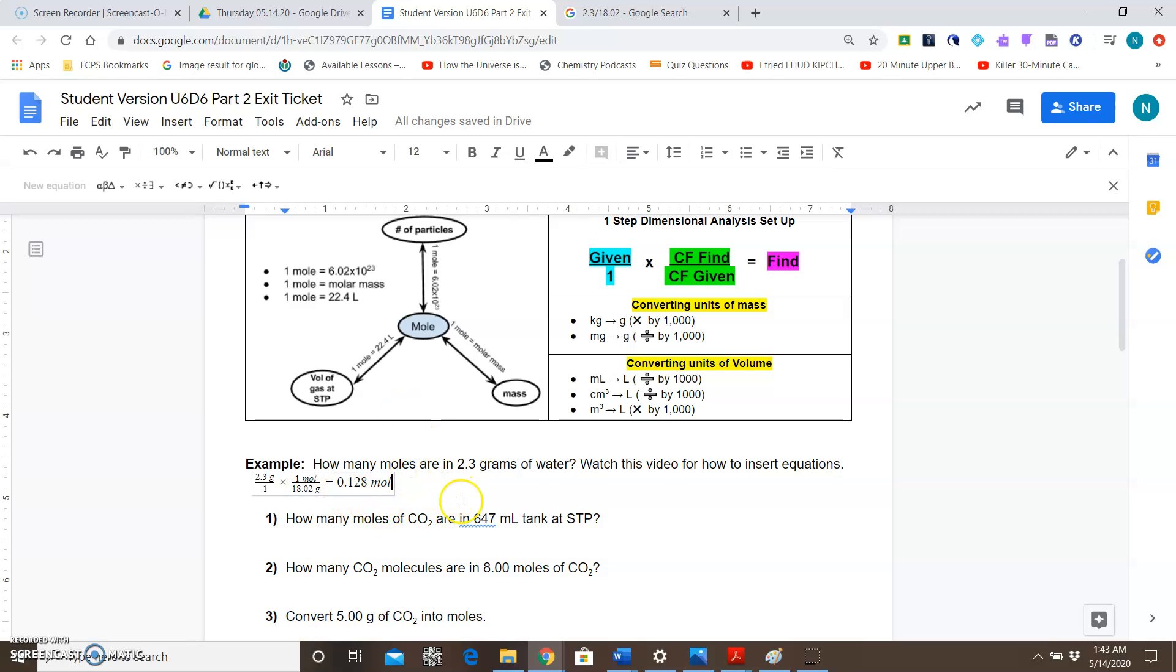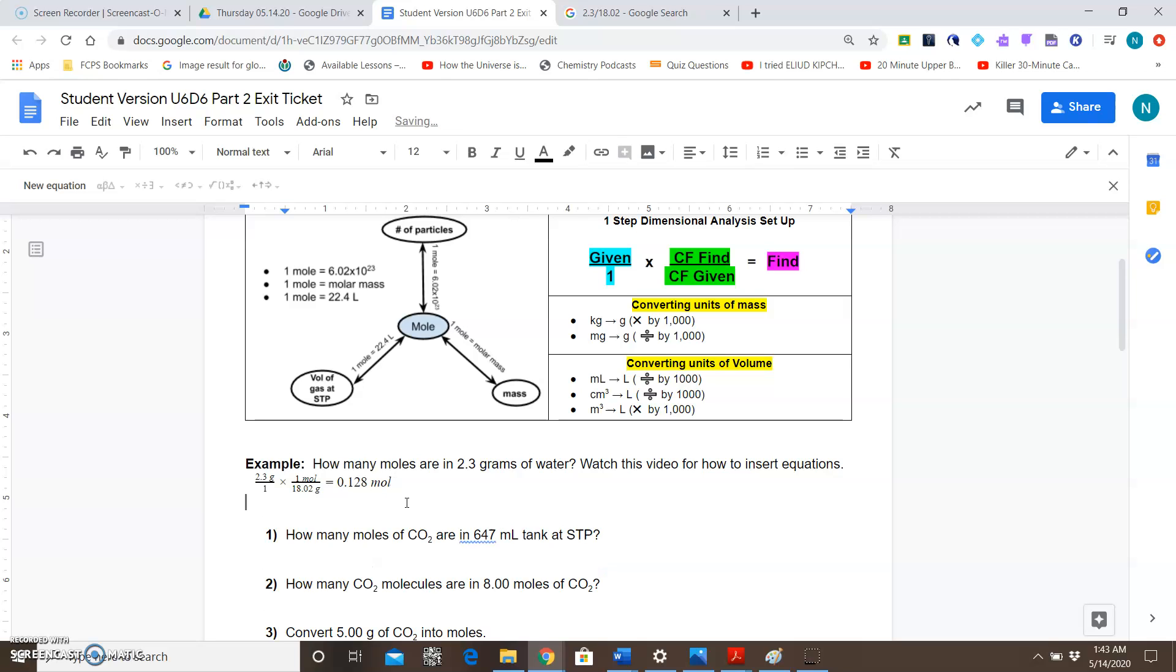All right. So that's how you do something like this if you're dealing with mass to mole conversion. The last thing I want to show you is how do you type in something like an exponent, like for Avogadro's number? What would you do in that case?